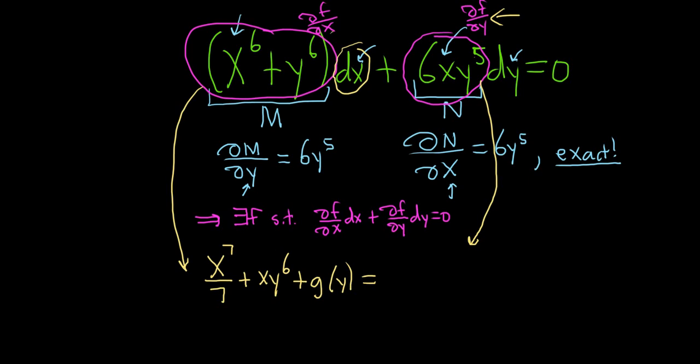So doing that is going to give us 6X, Y to the sixth over 6. Because the X is a constant, we end up with X, Y to the sixth. Plus, we have to add an unknown function of the other variable. So I'll just say H of X.